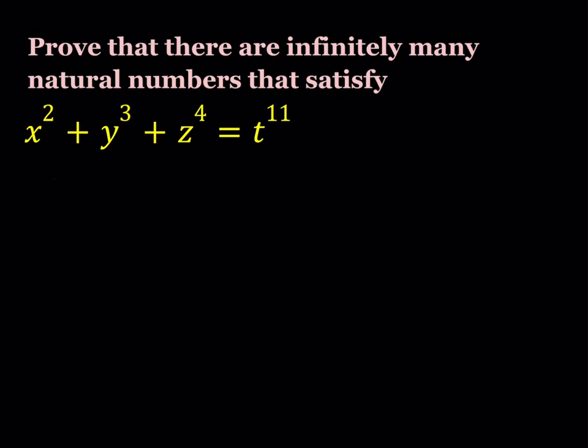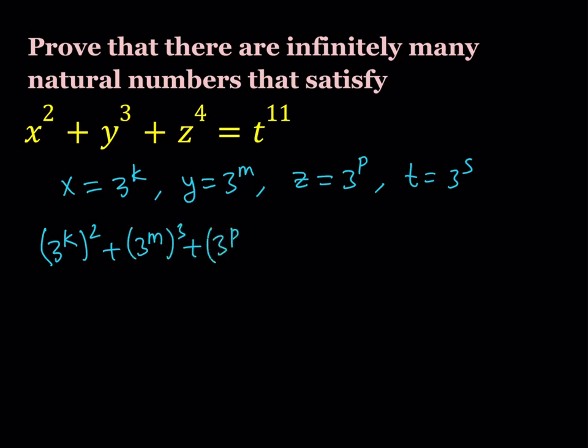I'm going to assume that x can be written as 3 to the power k, y can be written as 3 to the power m, z can be written as 3 to the power p, and t can be written as 3 to the power s where these are going to be positive integers. Now when I do the replacements, this is what happens: 3 to the k squared, 3 to the m cubed, 3 to the p fourth power, and on the right hand side we have 3 to the s to the power 11.